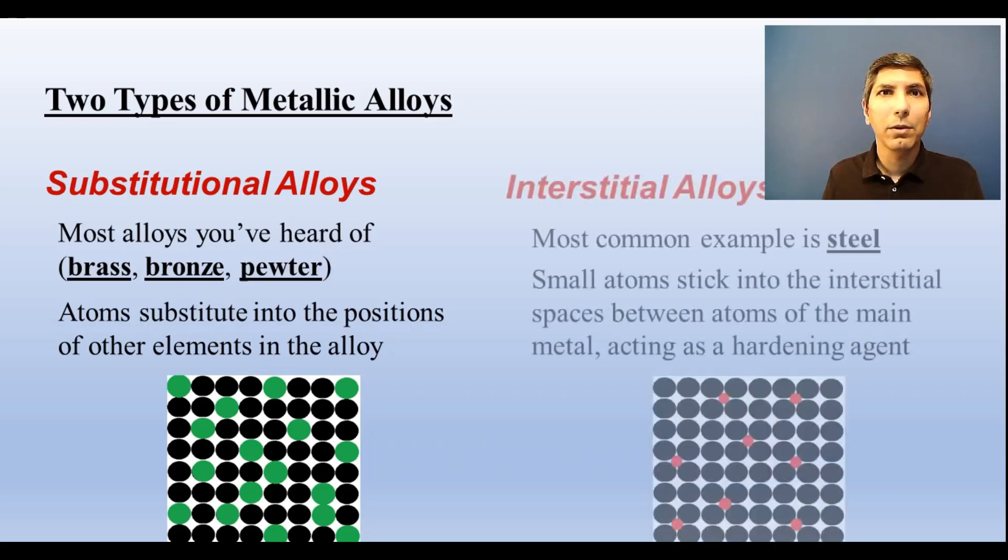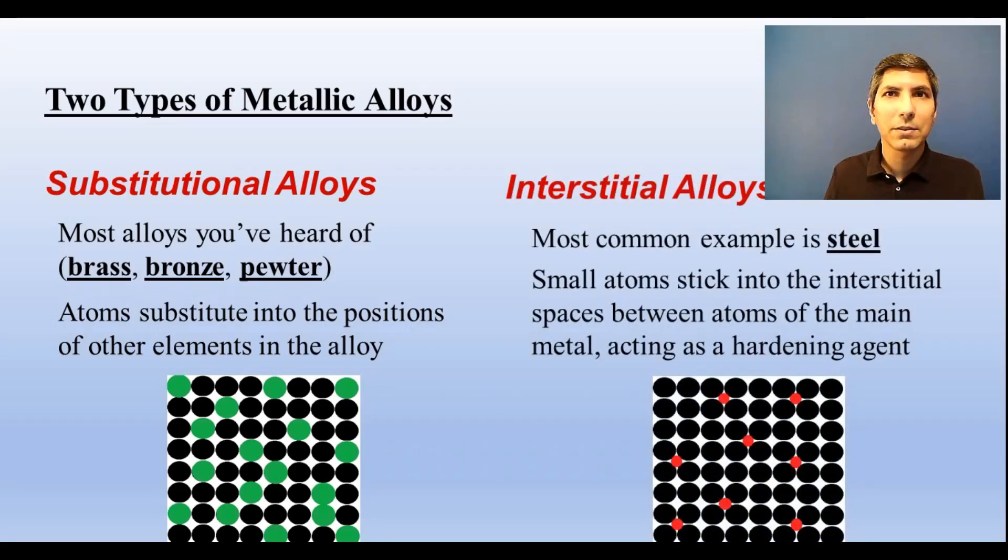Now some alloys have a metal with much smaller atoms that stick themselves in the spaces between the atoms of the metal. Here's an example of that. This is called an interstitial alloy. Now steel is the best example of this. Little carbon atoms stick themselves into the interstitial spaces between the iron atoms.